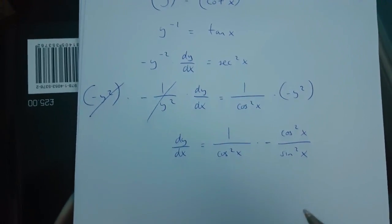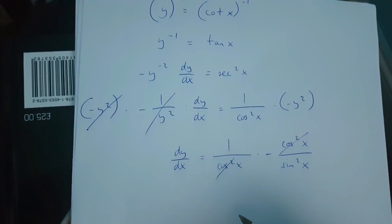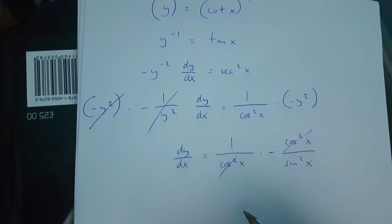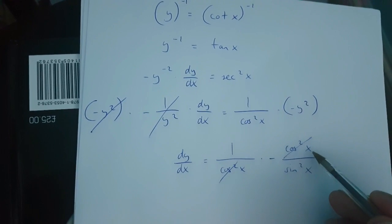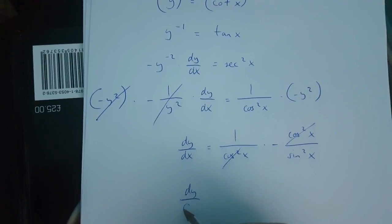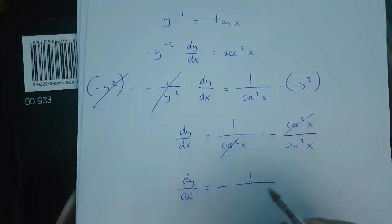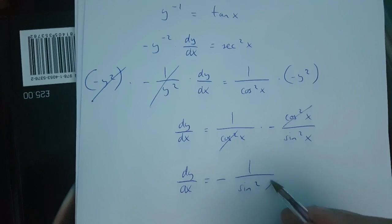Now this is in fact equal to minus 1 over sin x squared because we've got a cos x squared over here and 1 over here. So dy over dx is equal to minus 1 over cos x squared.